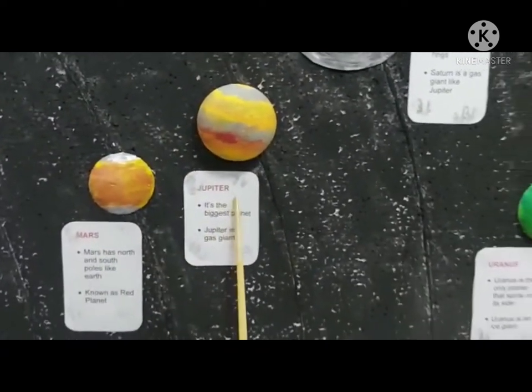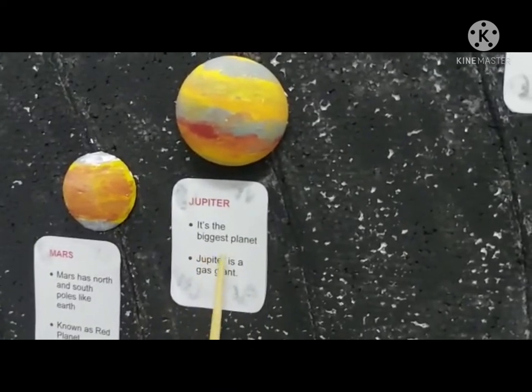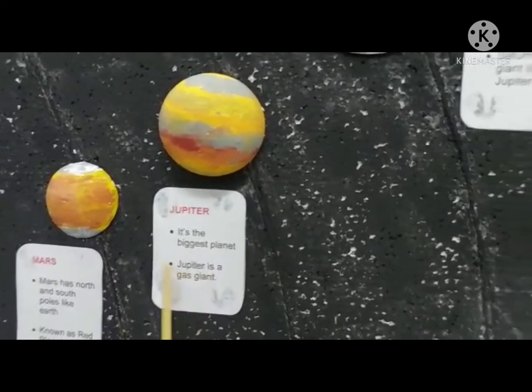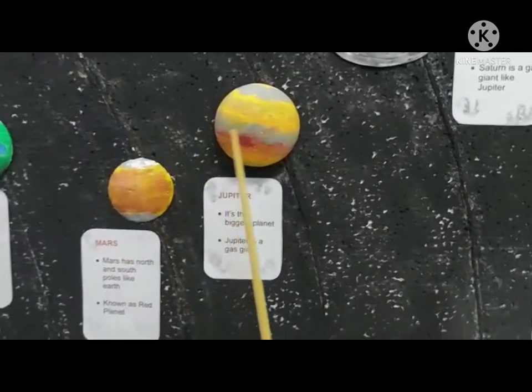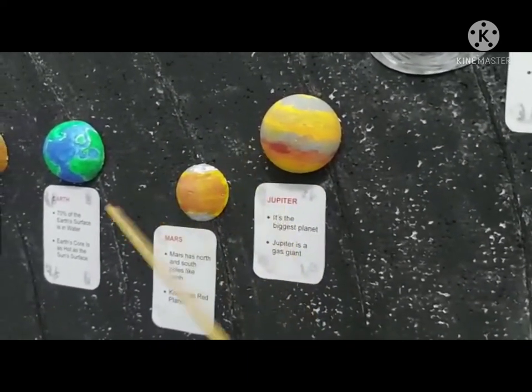Jupiter is the biggest planet. Jupiter is a gas giant. Jupiter has a hole because Jupiter is made from hot gas.